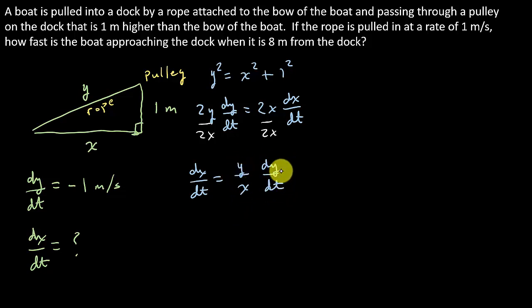DYDT, well, I know that's negative 1, so I'll plug the negative 1 into there, and they tell us when the boat is eight meters from the dock. So when this distance is eight meters, so I know I can plug eight in for X. So we know X is equal to eight meters. But now I need to find out what Y is.